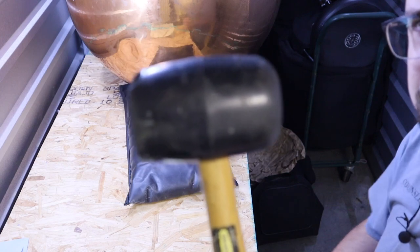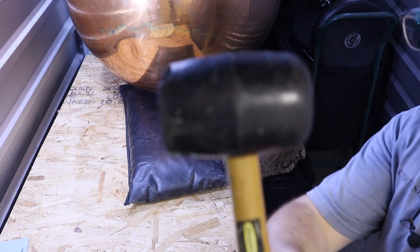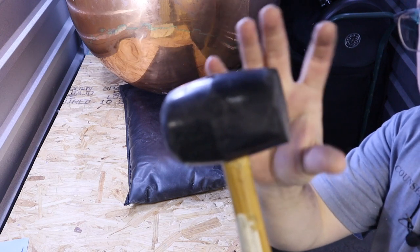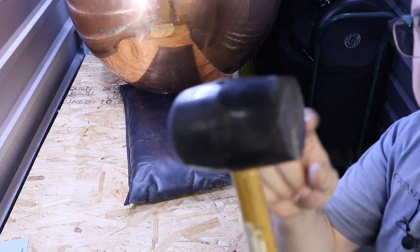This is a rubber mallet you can pick them up at most big box stores, but they usually come with this flat end. If you hit a copper bowl with this flat end, you're gonna get kind of a smile effect, you're gonna get some half moon crescent type dents.